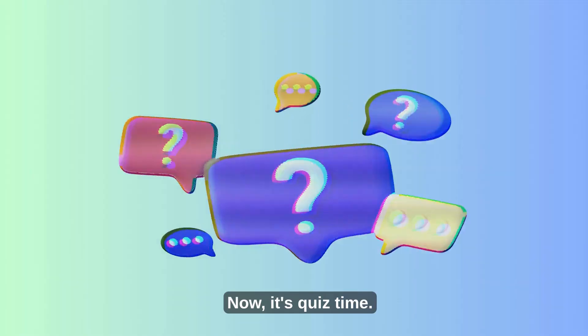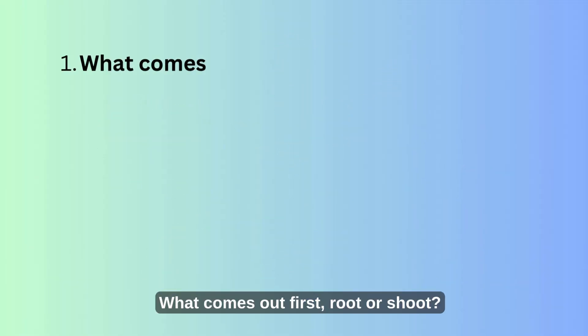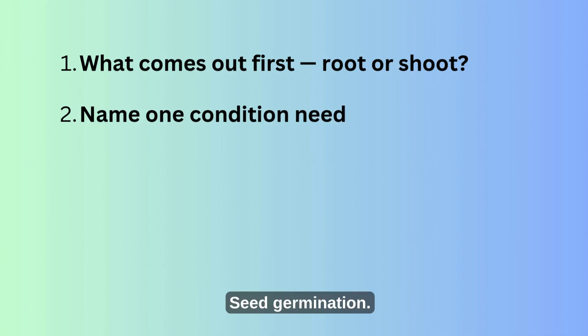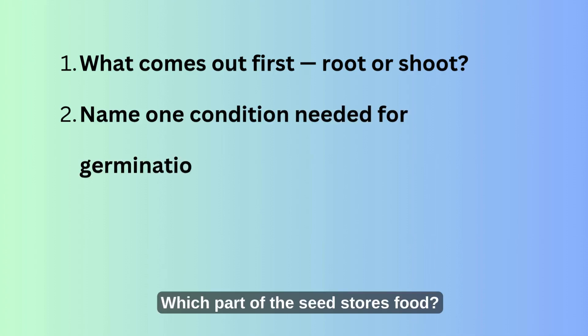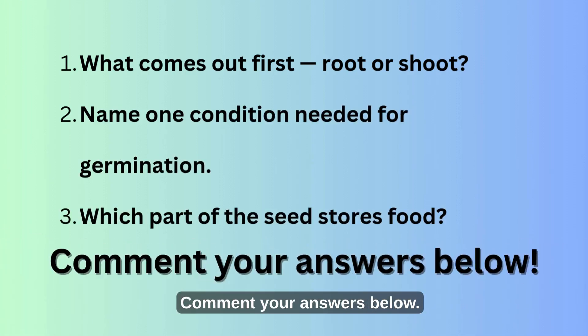Now it's quiz time. What comes out first — root or shoot? Name one condition needed for germination. Which part of the seed stores food? Comment your answers below.